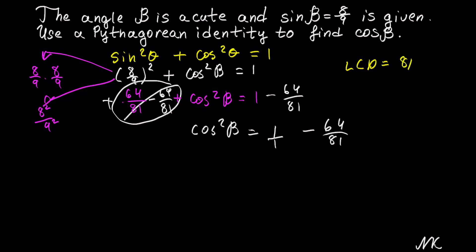So, in the first fraction, we can multiply denominator by 81 and numerator by 81. And we get cos² β = 81/81 - 64/81. Now we can bring everything under common denominator, so we have cos² β = (81 - 64)/81.